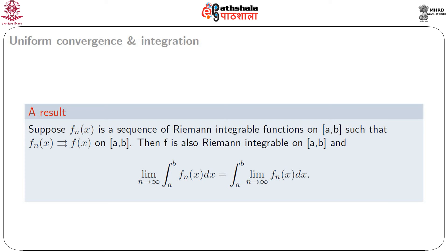Lastly, we discuss the exchangeability of integration and limit. Suppose f_n(x) is a sequence of Riemann integrable functions on [a, b] such that f_n(x) converges uniformly to f(x) on [a, b]. Then f is also Riemann integrable on [a, b], and the limit of the integral of f_n(x) dx over [a, b] equals the integral over [a, b] of the limit function, i.e., ∫f(x)dx. As a consequence of uniform convergence, we can interchange limit and integration operators.